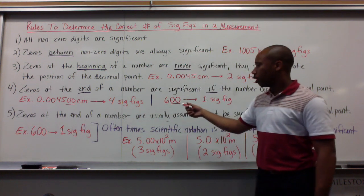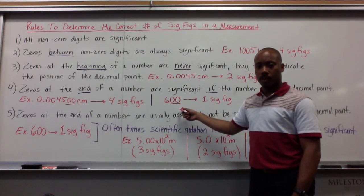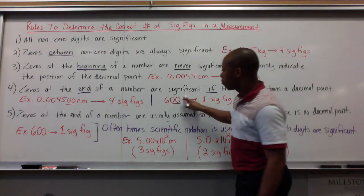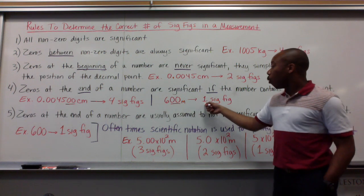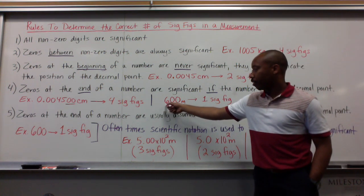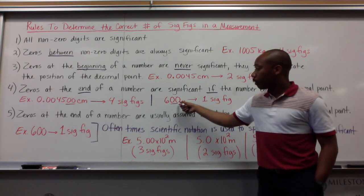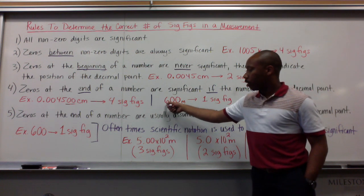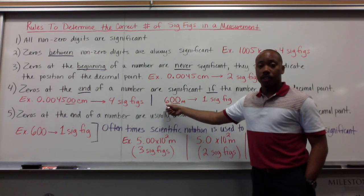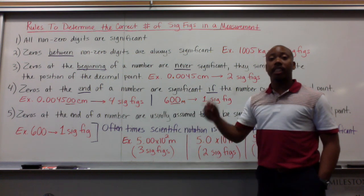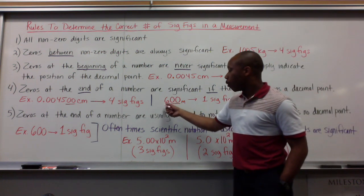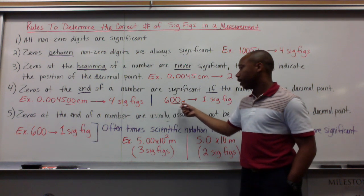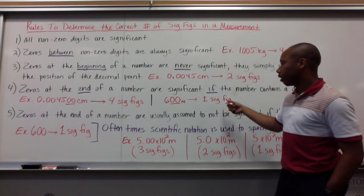Let's look at this example. 600 meters. There's one significant figure here because these two zeros, even though they come after a non-zero digit, they don't come after a decimal point. There's no decimal point before these, thus, these are not significant, so I only have one significant figure.